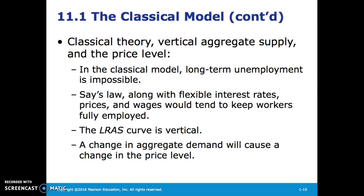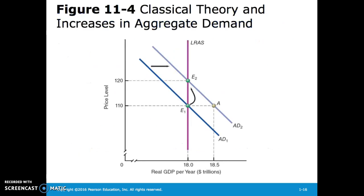Any change in aggregate demand will cause a change in the price level. Here we can see a visual representation of that, where the long-run aggregate supply curve is vertical. Any shift in aggregate demand just increases the price level.